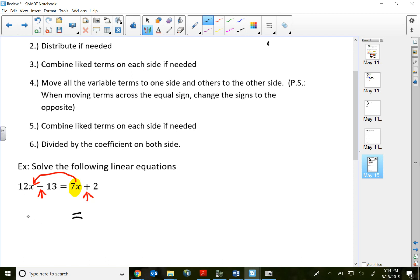So on the left side, 12x is still 12x. Positive 7x comes over, it will become negative 7x. So if the variable term is going to be on the left side, then that means the negative 13...